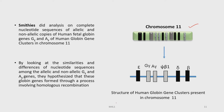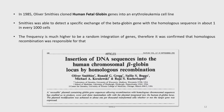You can see here the structure of the human globin gene clusters in chromosome number 11. In 1985, Smithies cloned the human fetal globin genes into an erythroleukemia cell line and was able to detect the specific exchange of the beta-globin gene with the homologous sequence in about 1 in every 1,000 cells. The frequency is much higher than expected for random integration of genes, confirming that homologous recombination was responsible for this phenomenon.